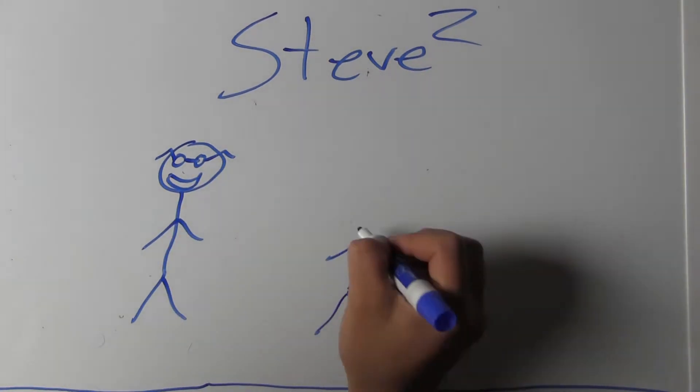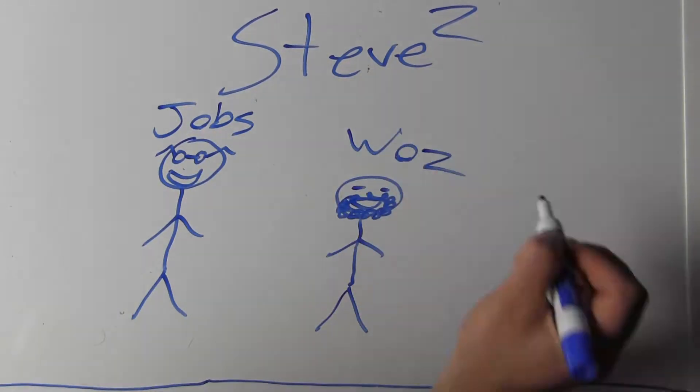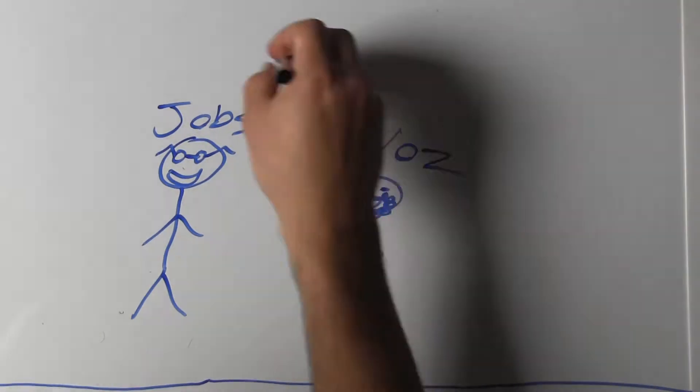The two Steves were both college dropouts and they decided together that they wanted to create a user-friendly computer, so they decided to create the Apple.